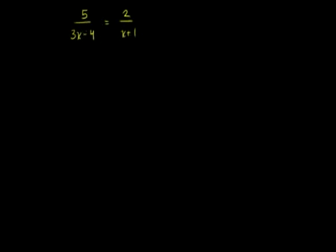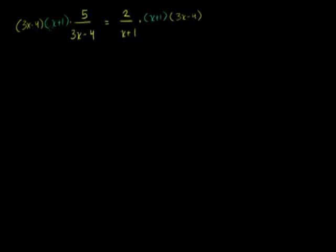So if we multiply both sides of the equation by x plus 1, it's going to get rid of this x plus 1 in the denominator. And of course, we have to do it to both sides. But we also want to get rid of this expression right here, so let's multiply both sides by 3x minus 4 as well. Whatever I multiply on one side, I also have to do on the other side.